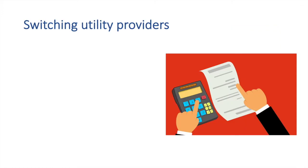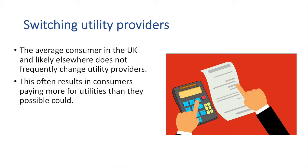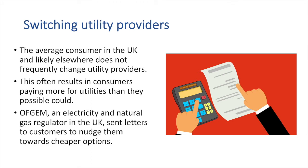Utilities are the basic necessities for living a comfortable daily life. They include water, gas, electricity, amongst others. The average consumer in the UK, and likely elsewhere, does not frequently change utility providers. This often results in consumers paying more for utilities than they possibly could. Ofgem, an electricity and natural gas regulator in the UK, sent letters to customers to nudge them towards cheaper options. Called the Cheaper Market Offers Letter, it was successful in converting some customers and arguably more successful than efforts that did not include a direct letter.